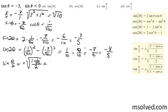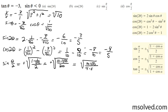This simplifies down to the square root of 10 minus square root of 10, all over 20. This is as far as you need to go, but optionally you can pull out a one-half, giving you one-half times the square root of 10 minus root 10 over 5.